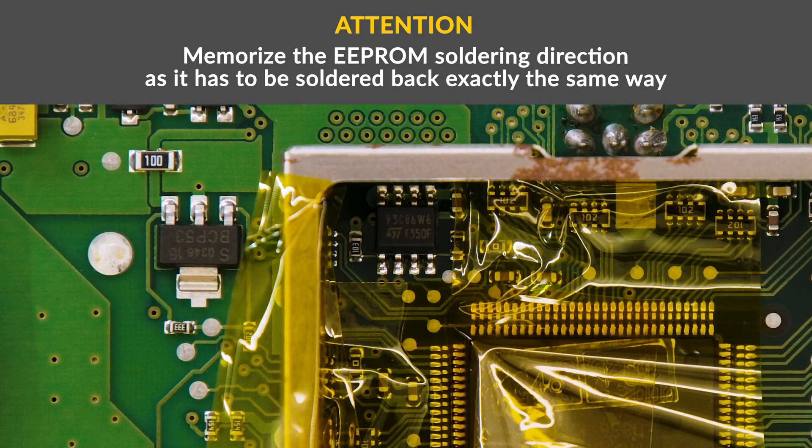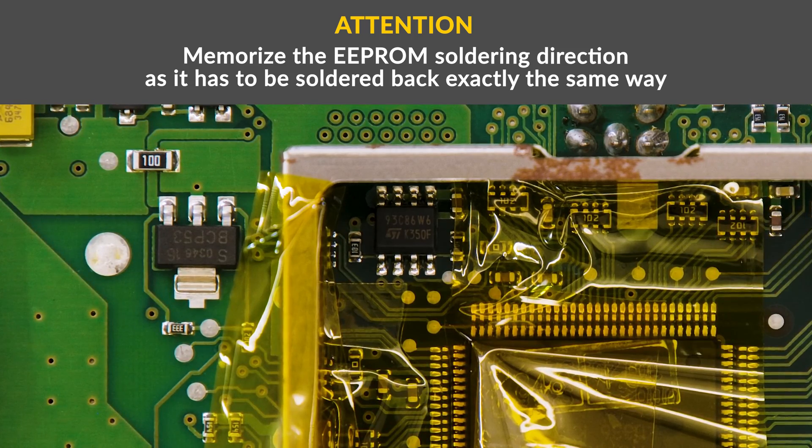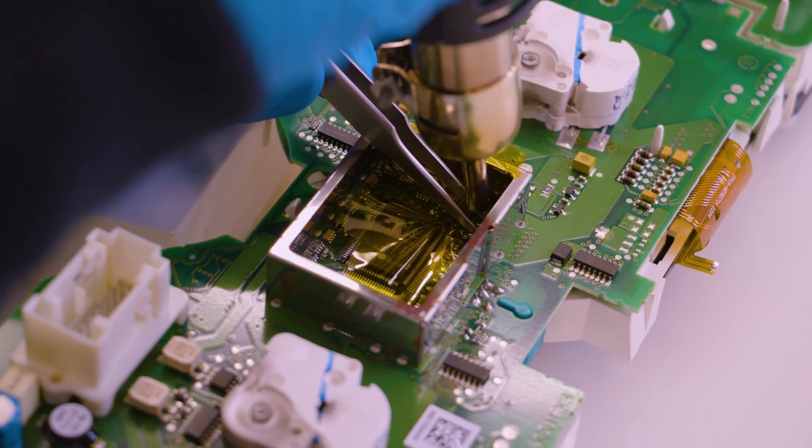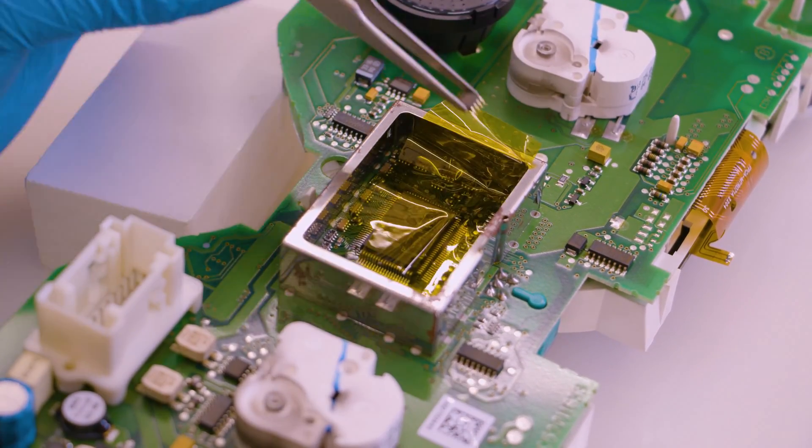Memorize the EEPROM soldering direction as it has to be soldered back exactly the same way. With the hot air desoldering iron, desolder the EEPROM with the head of the tweezers.